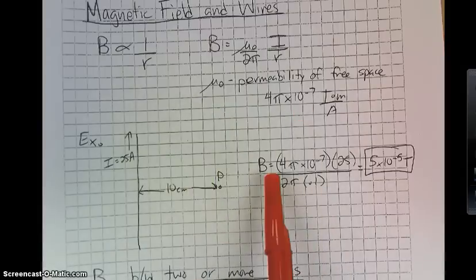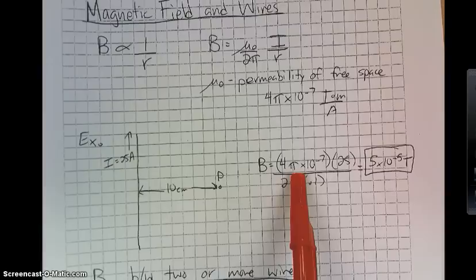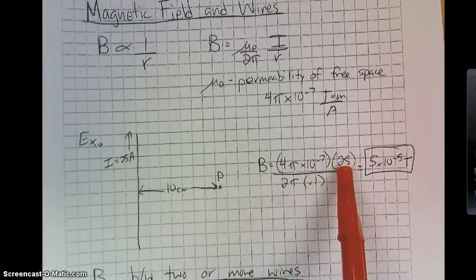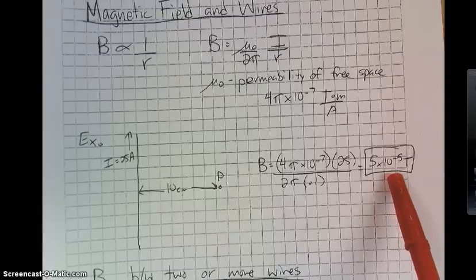Well, we can do the equation here. We've got a constant. Here's our permeability of free space. Here is your current. 2π stays on the bottom. And our 0.1, which allows us to solve for 5 × 10⁻⁵ Teslas.